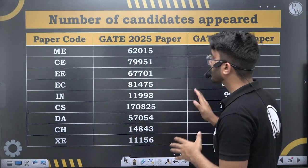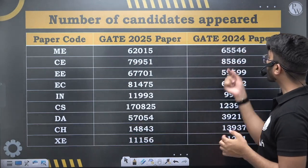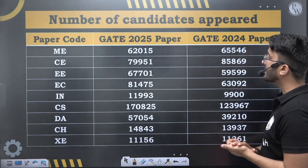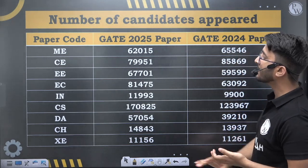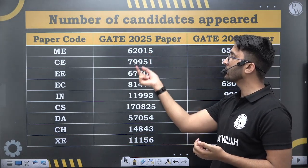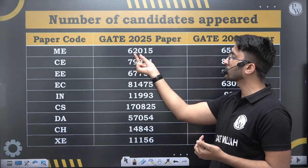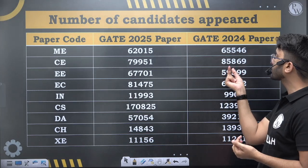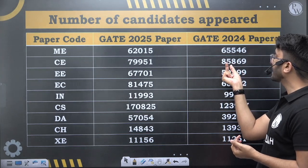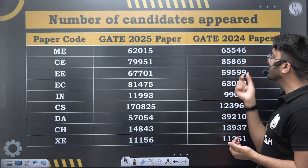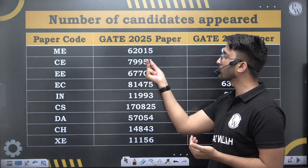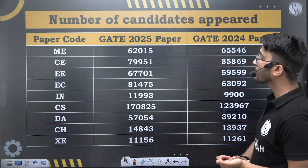In Mechanical, last year the total number of students appeared was 65,546 and this year it is 62,015. For Civil, last year the total number of students appeared was 85,869 and this year it is 79,951.